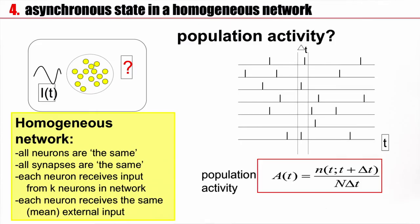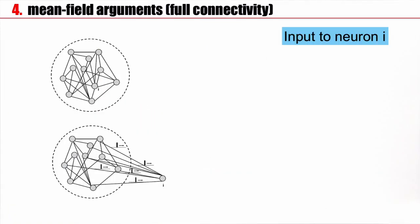These are now the notions. We have the population activity, A bar of t, because it's averaged over a small time window. Now let's formalize our assumptions. We go to the extreme and say mathematically all neurons are the same, all the synapses are the same. Each neuron receives input from exactly k neurons and each neuron receives the same external input, which can be time-dependent. As a first step, let's look at full connectivity.